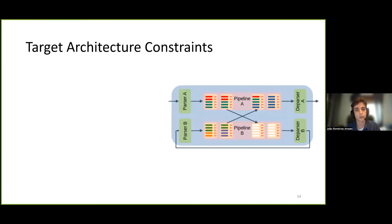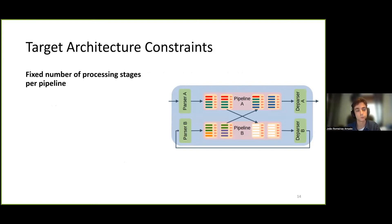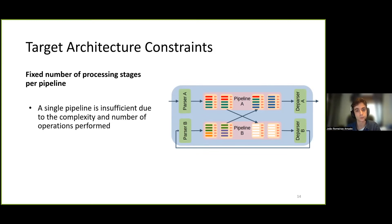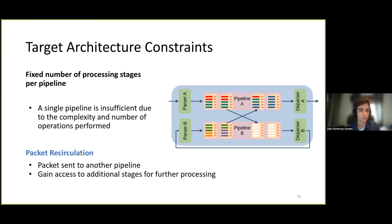A third challenge was that due to the number and complexity of the operations performed, a single processing pipeline was insufficient, as the Tofino switch contains a fixed number of processing stages per pipeline. To overcome this limitation, we leverage a packet recirculation mechanism, where a processed packet is sent to another pipeline in the switch, gaining access to additional stages for further processing. This recirculation process has a cost, so we only perform it at the end of each epoch when we calculate 2D statistics, as the additional calculation operations required by these statistics require a higher number of stages.